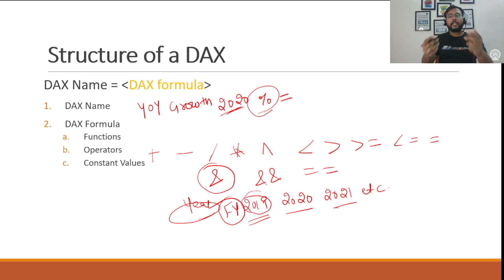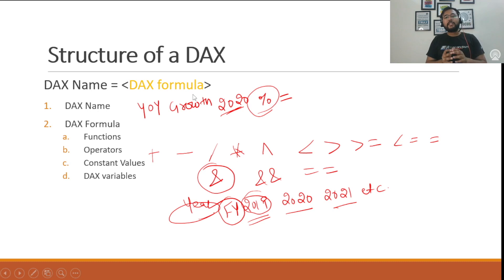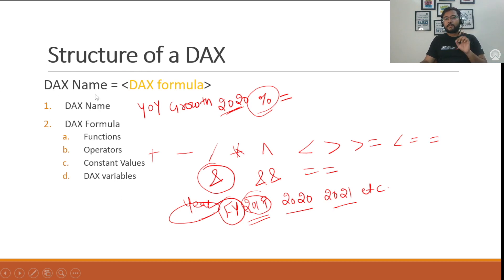The fourth and most important component is DAX variables. A DAX variable is a variable under which we store the output of a DAX formula. On screen you can see we have a DAX name and DAX formula — the output of the DAX formula is stored under the DAX name. So DAX variable and DAX name are the same things. Power BI gives you the leverage to use predefined DAX variables in other DAX equations.